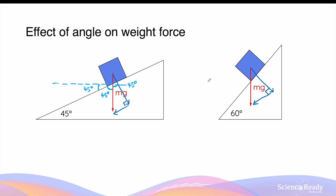The same applies for the 60-degree surface. Drawing a dashed line, this angle here will be 60 degrees. This angle here will be 90 minus 60, which is 30 degrees, because this angle here is the right angle. This angle here would be 90 minus 30, which gives you back 60 degrees. This is because this component of weight force is perpendicular to the actual inclined surface itself, which is why we subtract 30 degrees from 90 to find the angle here is 60.